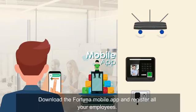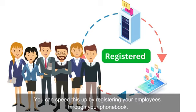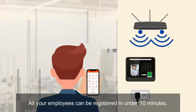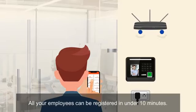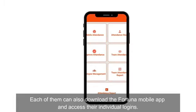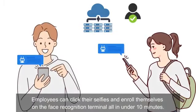Download the Fortuner mobile app and register all your employees. You can speed this up by registering your employees through your phone book. All your employees can be registered in under 10 minutes. Each of them can also download the Fortuner mobile app and access their individual logins.